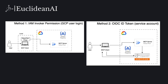GCP provides two main authentication methods for securing your MCP server. The first is IAM Invoker Permission: it uses a local Cloud Run proxy that authenticates requests with your Google account's IAM permissions. It's great for personal or small-team use with no extra setup required if you have the right permissions already. The second is OIDC ID Token: it uses a service account to generate OpenID Connect OIDC ID tokens for authentication. This is more flexible for automated or machine-to-machine access and is the recommended approach for CI/CD or service integrations.